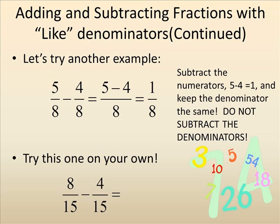Let's try another example: 5 eighths minus 4 eighths. Notice we are subtracting the numerators — the numbers on top — so 5 minus 4 equals 1. And we are keeping the denominator, the bottom number, the same. Please keep in mind we only add or subtract the numerators, which is the top number on each fraction, and we keep the denominator the same. We do not subtract the denominators.